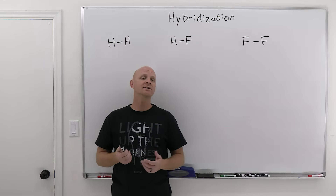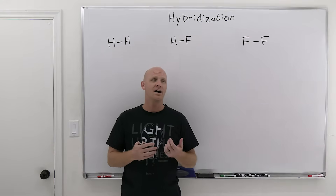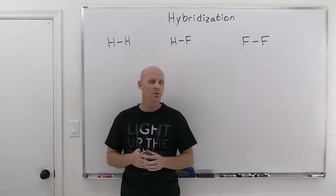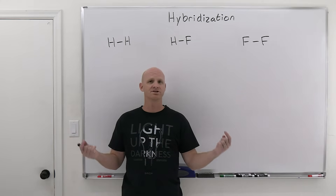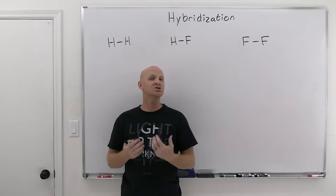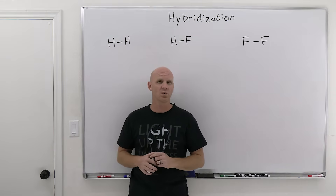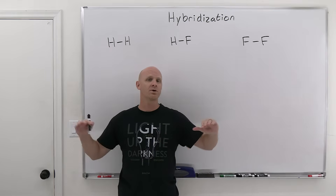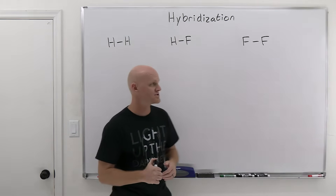We're going to start with valence bond theory. Valence bond theory says that atoms use their unpaired electrons to form bonds. Each of two atoms are going to contribute an unpaired electron, and that pair of electrons is now going to be shared to create a bond. It also says that the atomic orbitals from both atoms overlap in the process of bond creation.